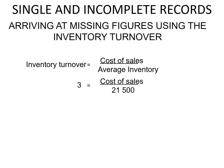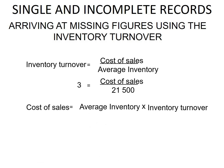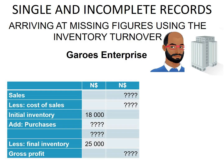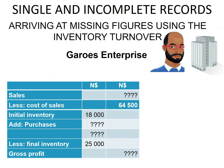We need to determine cost of sales, so we rearrange the formula: cost of sales equals average inventory multiplied by inventory turnover. This gives us a cost of sales of 64,500. We'll now begin the trading account of Garus Enterprise and enter our cost of sales of 64,500.